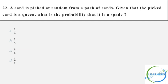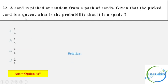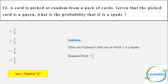This is a simple one. A card is picked at random from a pack of cards. Given that the picked card is a queen, what is the probability that it is a spade? How many queens are there in a pack of 52 cards? Only 4 — one per suit: spade, diamond, heart, club. So the answer is 1/4.